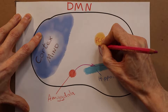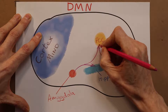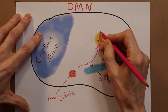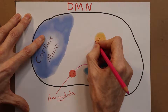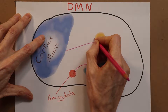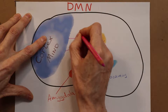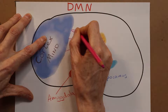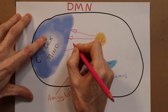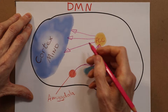Between the two of them they pass this information up to a processing center — the posterior cingulate cortex — which then relays these distressing thoughts and feelings into the cortex, the thinking part of the brain, or the mind.